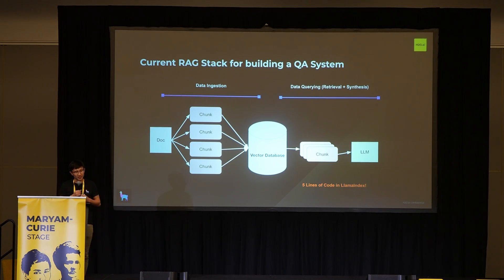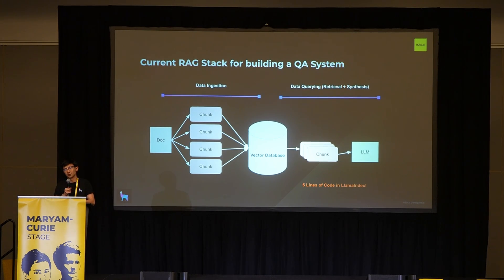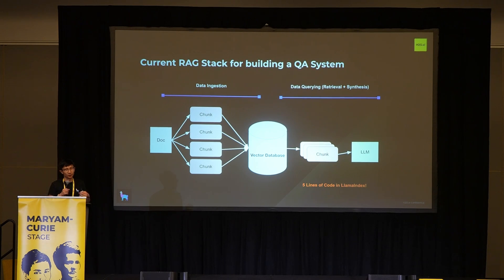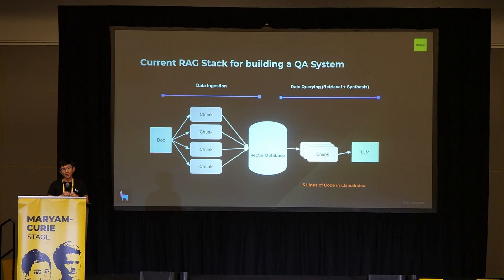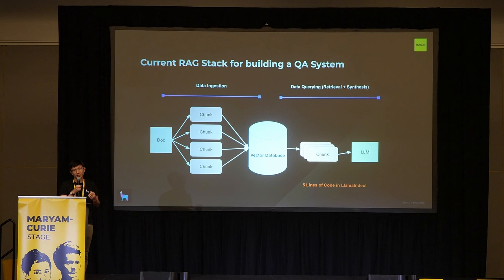The current stack for building a QA system has two main categories: data ingestion and data querying. Data ingestion is the data pipeline into your vector database that you need to set up to get this up and running over your data. If you have a bunch of PDFs, invoices, documents, CSVs, spreadsheets, and you want to transform them into a usable format, the basic idea is that you put it into a transformation pipeline that will chunk up your documents and put them into a vector database.